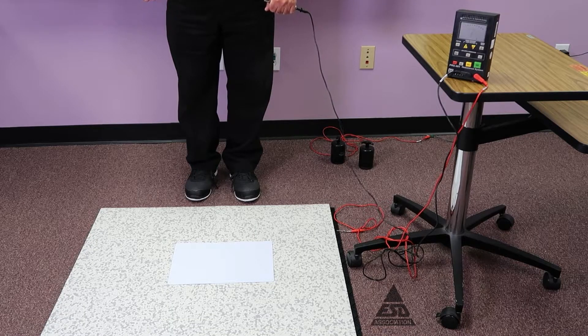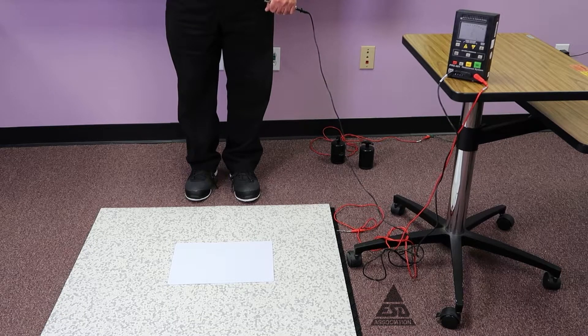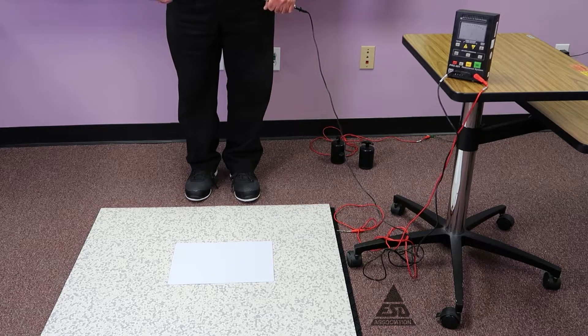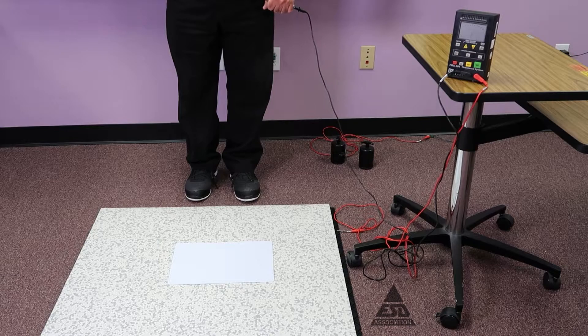One of the critical tests that we don't do very often is a combination of a person's resistance with the flooring system. This is to give you an idea of how the system resistance works.